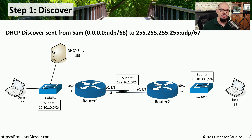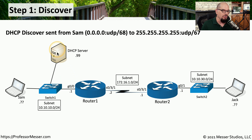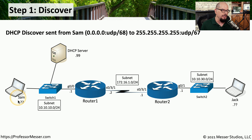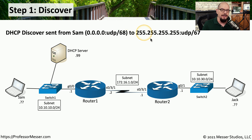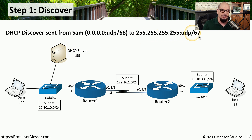Let's go through the process that DHCP uses when someone connects to the network and needs an IP address configuration. In this network, we have Sam on one side and Jack on the other. Sam is connected to a switch, and on that local network with the switch is a DHCP server. There's also a router connecting sites together, and Jack is at the other site connected to that router with a switch. This starts with Sam sending a DHCP Discover message from 0.0.0.0, because Sam does not have an IP address, sent using UDP port 68 to 255.255.255.255 — the broadcast address for a network — and Sam is sending that broadcast to UDP port 67.